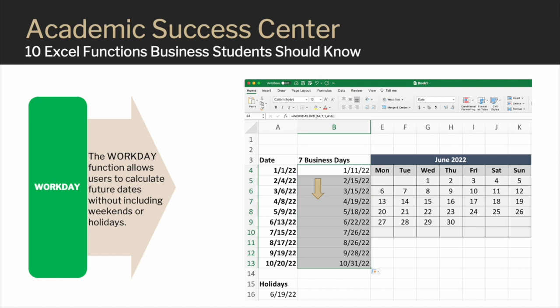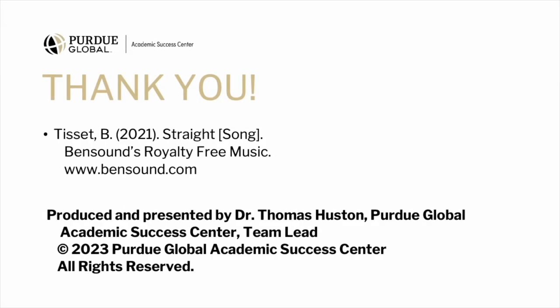Because we're checking just June, use the fill handle to drag the formula down to see 7 business days from 6/22. Now let's check for accuracy — let's select June to see if the date is correctly forecasted 7 business days from the start date of 6/13/22. If we refer to the calendar on the right, we see the 13th of June falls on a Monday. Note that Juneteenth holiday falls on a weekend, therefore we can shade out the weekend days. The 22nd of June falls on a Wednesday and is 7 workdays after 6/13/22. Be sure to check out Part 2 of 10 Excel Functions Business Students Should Know.